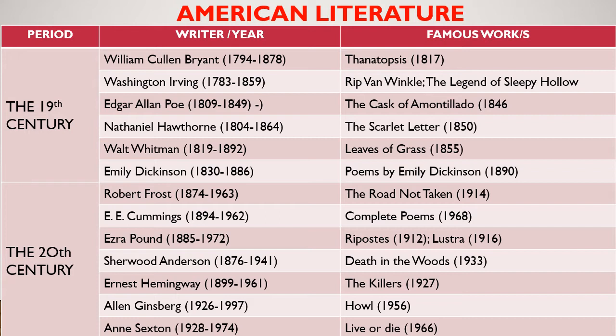Next is Edgar Allan Poe, 1809–1849. Poe became famous for his macabre stories. He was an American writer, poet, editor, and literary critic, best known for his tales of mystery and the macabre. Poe was born January 19, 1809, in Boston, Massachusetts, and died October 7, 1849, in Baltimore, Maryland.